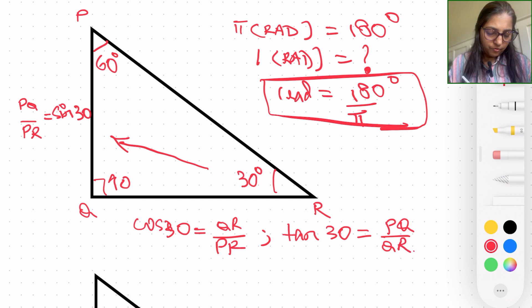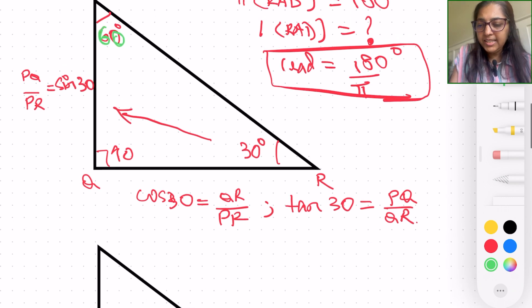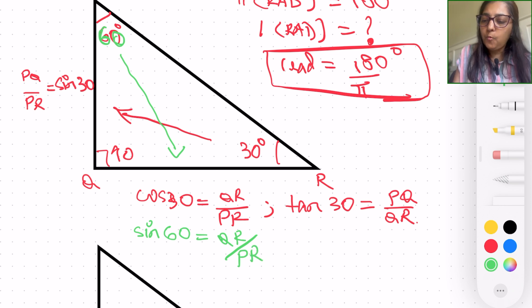Now, very interestingly, on the same triangle, if you were to figure out the same trigonometric, the three underlying trigonometric measurements, angle measurements for 60 degrees, you will notice sine 60 is the same as cosine 30. Sine 60, which is the opposite side for 60, is QR divided by PR. What is cosine 60? What is the adjacent side to 60 degree angle? It is going to be PQ, and the hypotenuse is PR.